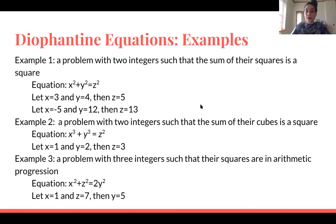Okay, and now here are just a couple of examples of the Diophantine equations that Diophantus used and created. The first example is using a problem with two integers such that the sum of their squares is a square. So the equation would be written as x squared plus y squared equals z squared. And now let's just suppose x equals 3 and y equals 4, so then 3 squared plus 4 squared. That's 9 plus 16, which is 25. And then the square root of 25 is 5, so z would be equal to 5. We can also use an example with x equals negative 5 and y equals 12. And then by solving that out, we would get z equals 13.